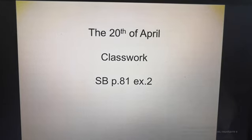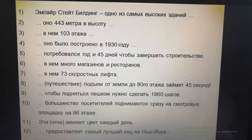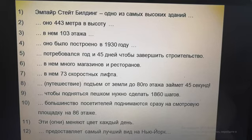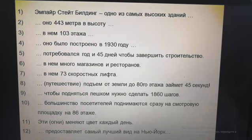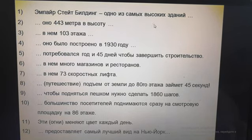The next step is your copybook. Open your copybook, write down the date and classwork. Then find the equivalents in the text — we need to find the English equivalent to each given sentence. For example: 'The Empire State Building is one of the tallest buildings.'